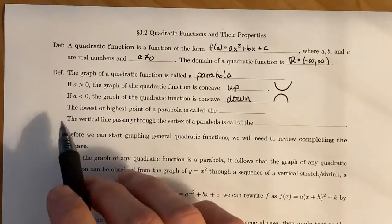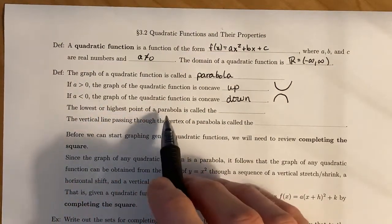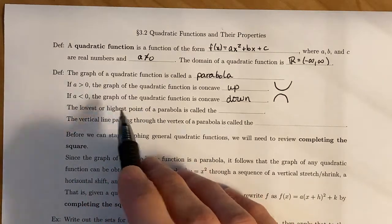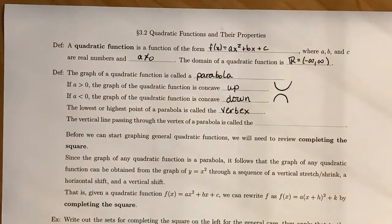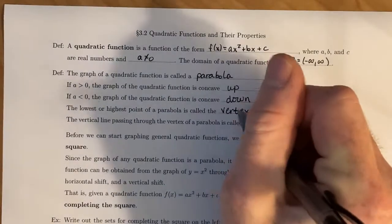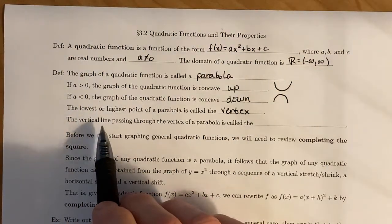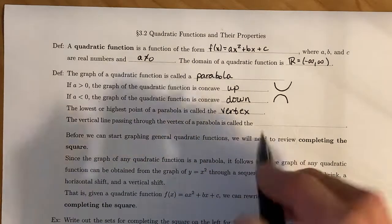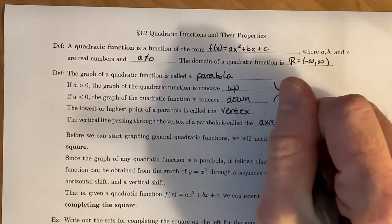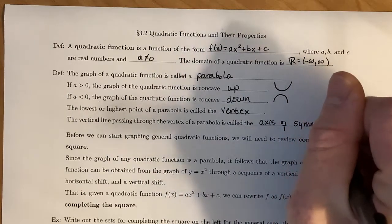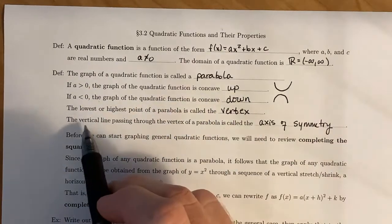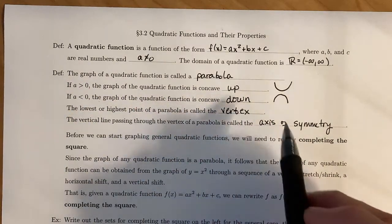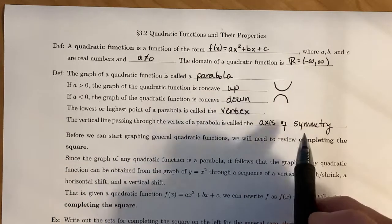Now the lowest or highest point of a parabola, so the absolute min or the absolute max, is going to be called the vertex of the parabola. And the vertical line passing through the vertex of a parabola is called the axis of symmetry. So if you think back to your algebra classes from high school, you've seen parabolas before. They're extremely symmetric, and this vertical line that passes through the vertex cuts that parabola right in half, and that's where the symmetry comes in.